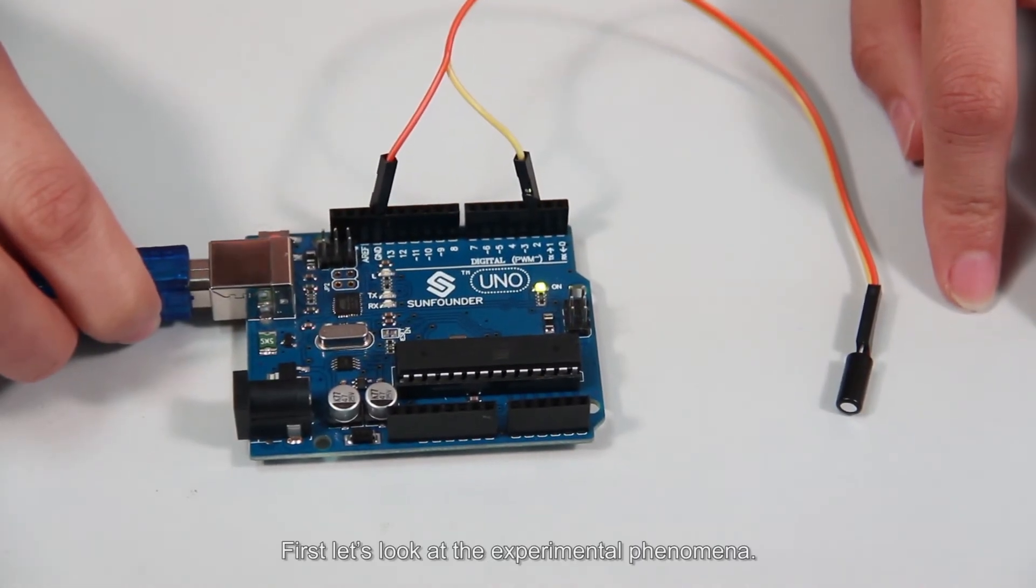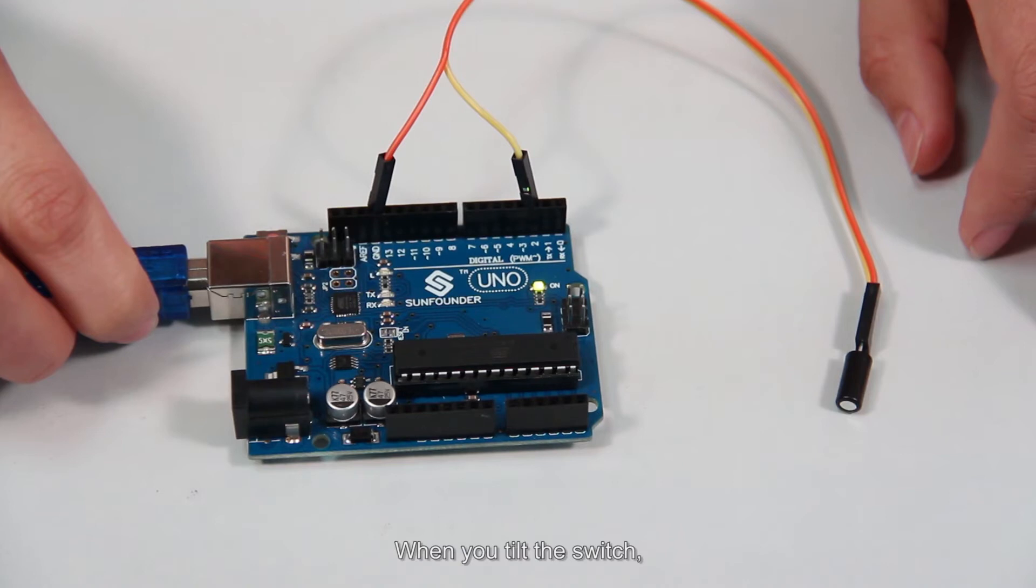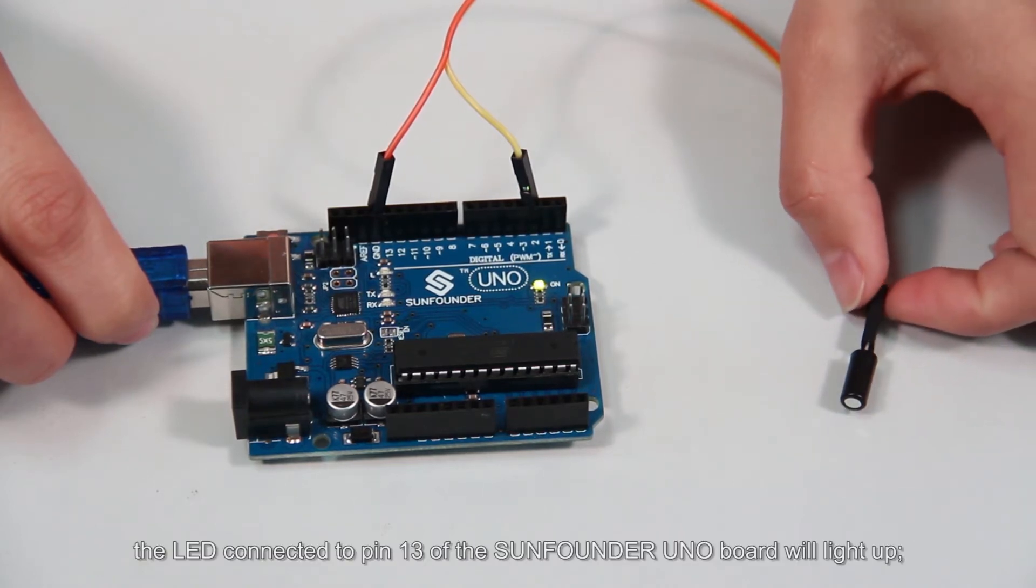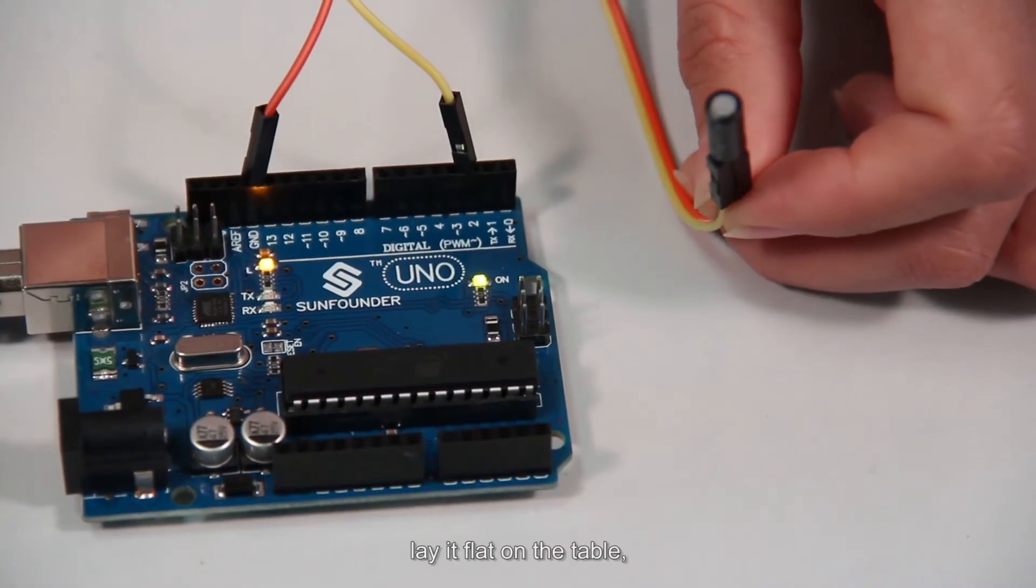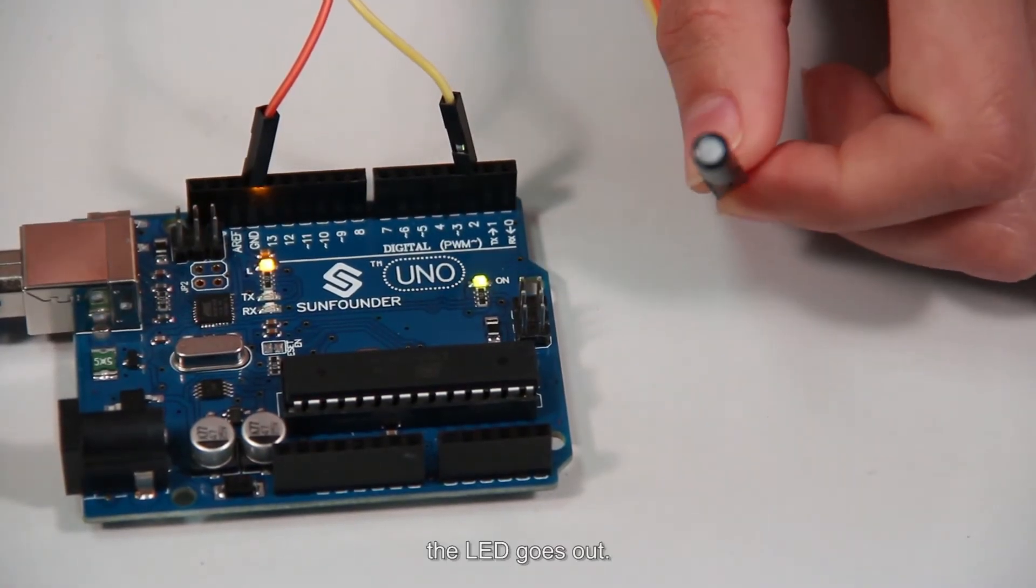First, let's look at the experimental phenomena. When you tilt the switch, the LED connected to pin 13 of the SunFounder UNO board will light up. Lay it flat on the table, the LED goes out.